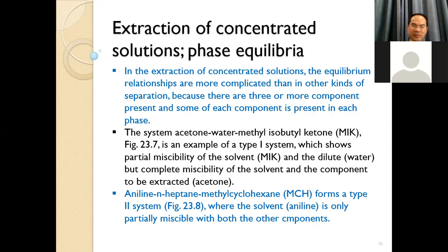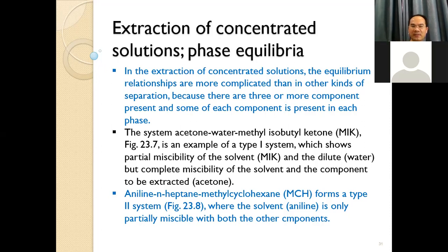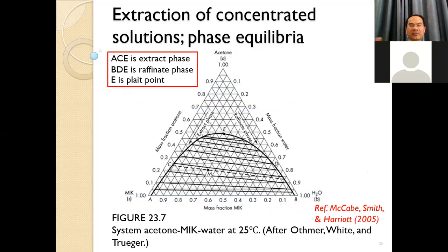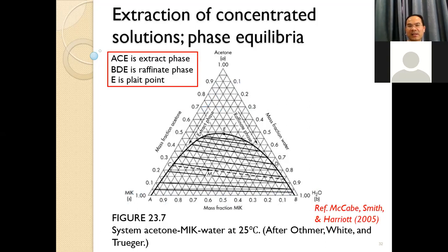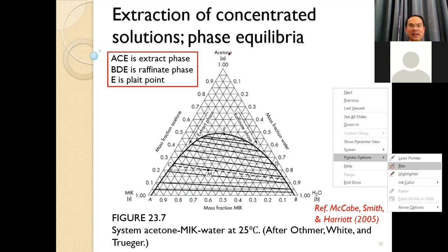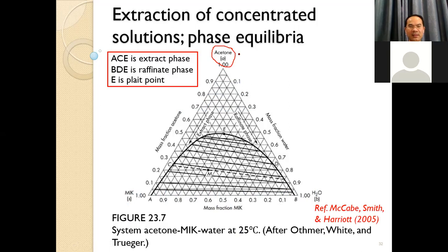For Type 1, both solvents are partially miscible with each other but completely miscible in the solute. For Type 2, one solvent is only partially miscible with the solute component as well. This is the common ternary diagram. We have three components inside: acetone, water, and MIK — and we would like to separate MIK.